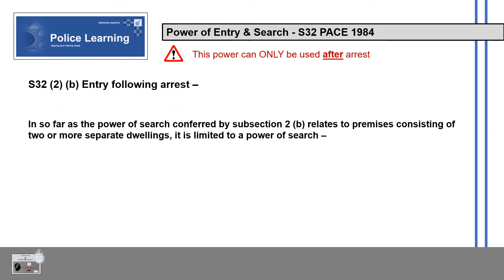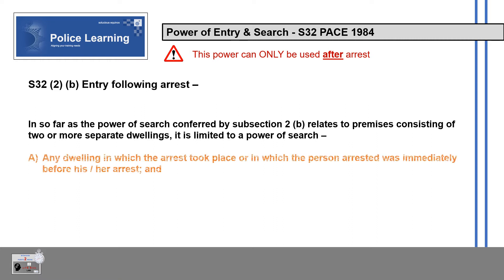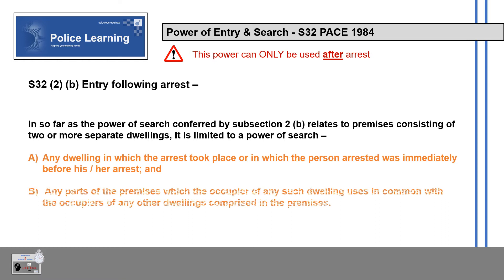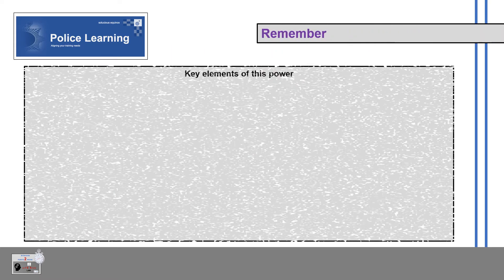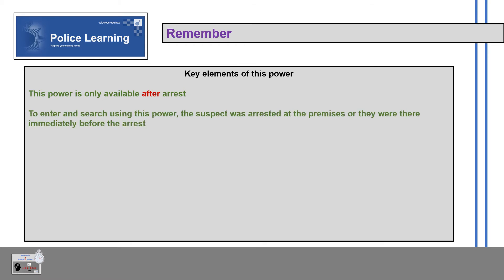Insofar as the power of search conferred by Subsection 2 relates to premises consisting of two or more separate dwellings, it is limited to: a) any dwelling in which the arrest took place or in which the person arrested was immediately before his or her arrest; and b) any parts of the premises which the occupier of any such dwelling uses in common with the occupiers of any other dwellings comprised in the premises. Remember the key elements of this power.